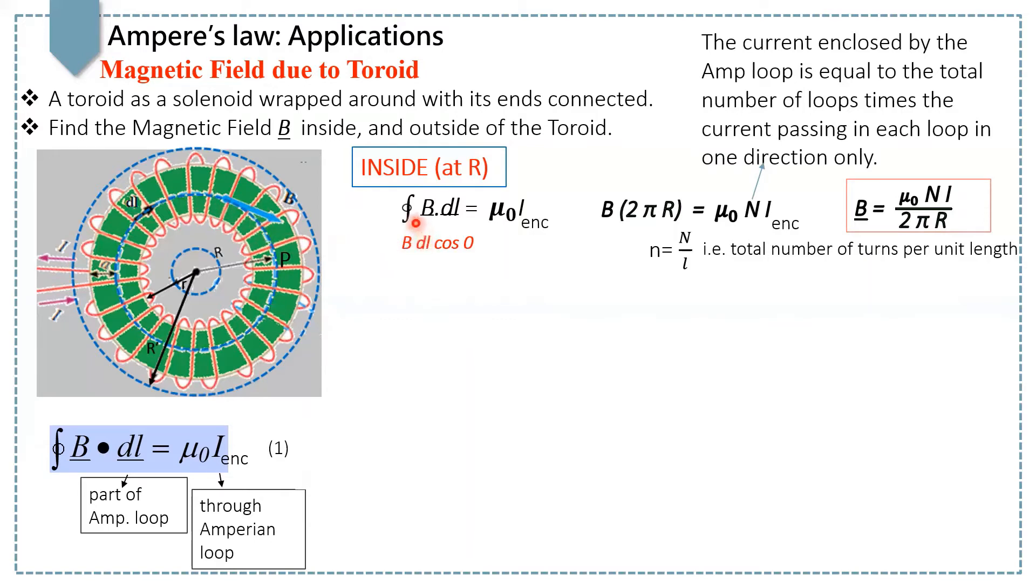By taking Ampere's law, we can write B dot dL as B dL cos of 0 degree, because there is 0 degree angle between the magnetic field and the small segment of the loop. Because we are talking about the whole loop, by taking the integral of dL, we will take the circumference of the whole circle, and that is 2 pi R.